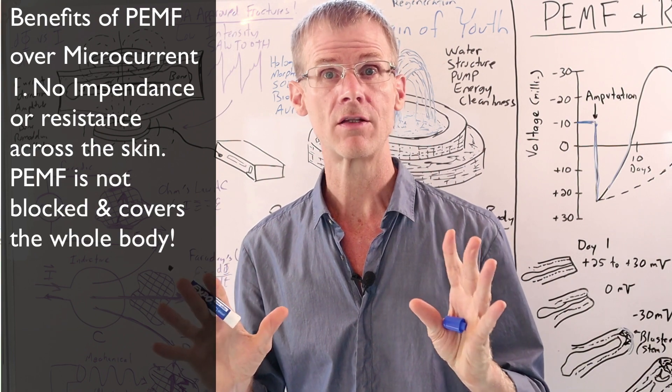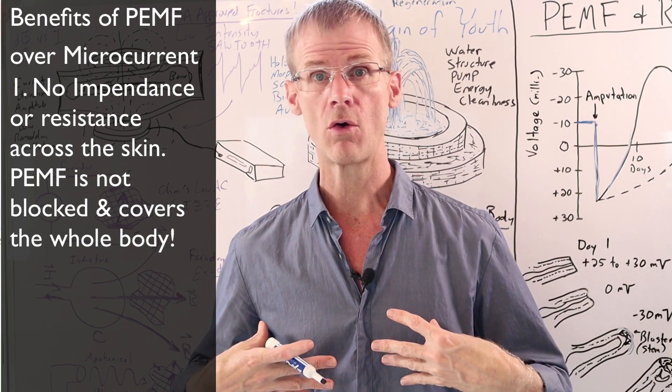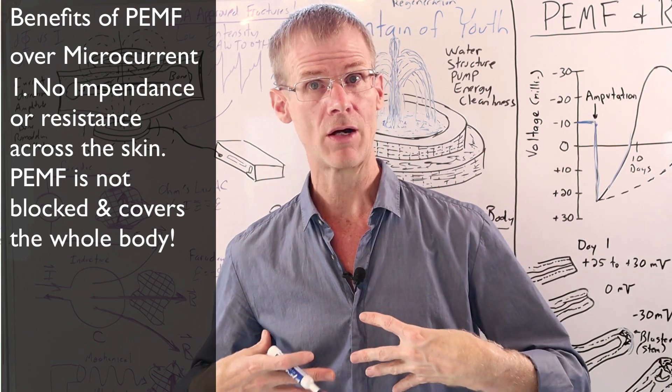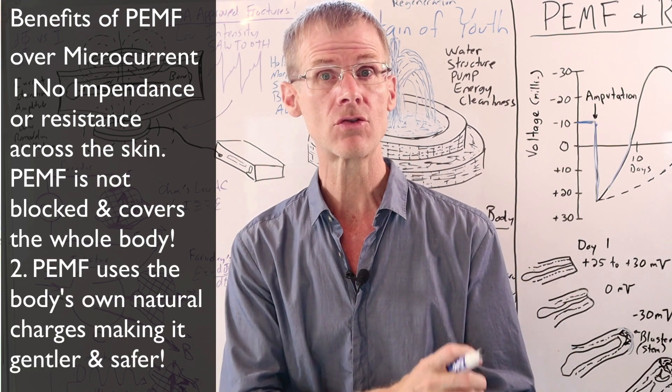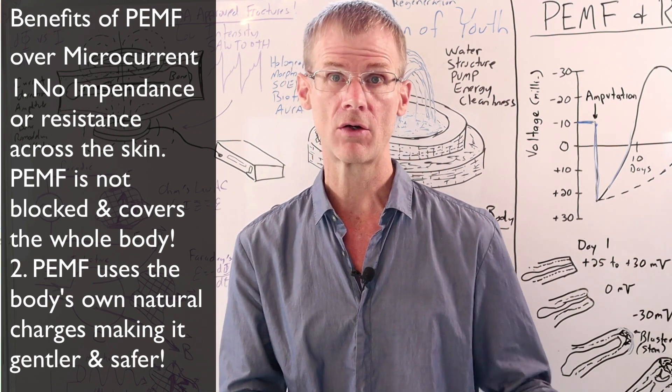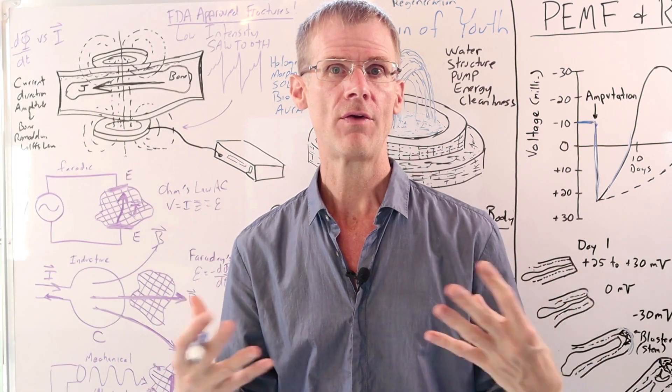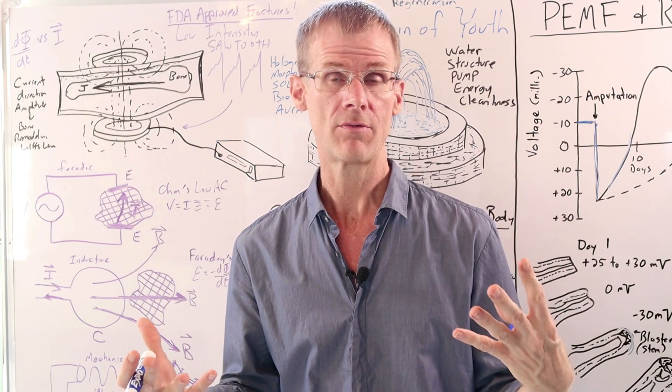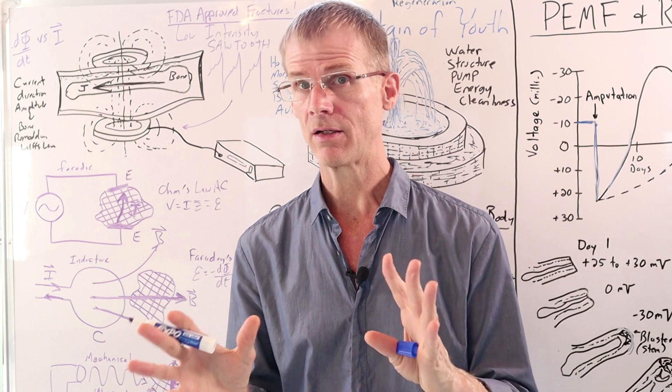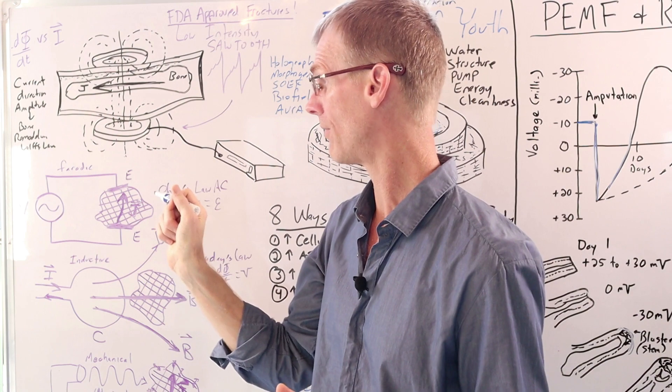But the nice thing about PEMF versus microcurrent therapy is, number one, there's no impedance. There's no blocking of the signal. It goes all the way through and covers the whole volume and penetrates really down to the bone marrow. Number two, it's using the body's own natural charges instead of adding electricity to the body, which can cause microelectrocutions. So it's just a much safer, better, faster approach to healing at a deeper level than electrocurrent therapy is. But again, electrocurrent therapy does work. It's just Andrew Bassett was finding a better solution with PEMF.